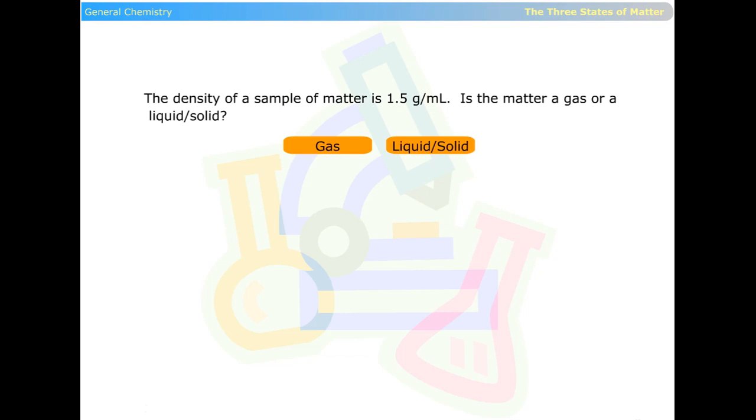The density of a sample of matter is 1.5 grams per milliliter. Is the matter a gas, or is it a liquid or solid? It is a liquid or a solid. Solids and liquids have densities in the grams per milliliter range.